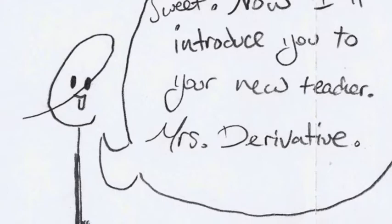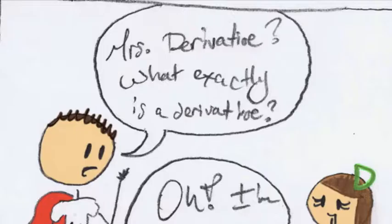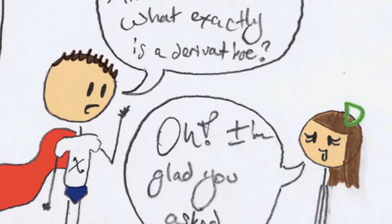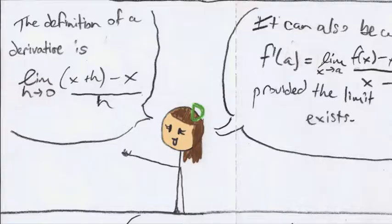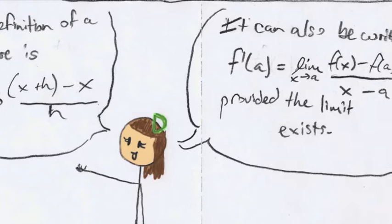Hello, math man. I am Mrs. Derivative. Mrs. Derivative? What exactly is a derivative? Oh, I'm glad you asked. The definition of a derivative is the limit as h goes to 0 of f of x plus h minus f of x all over h. It can also be written as f derivative of a equals the limit as x goes to a of f of x minus f of a all over x minus a, provided the limit exists.